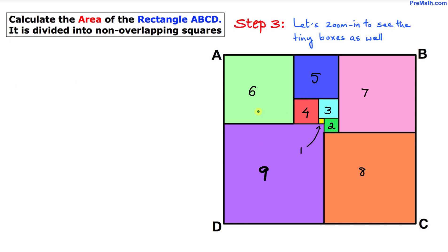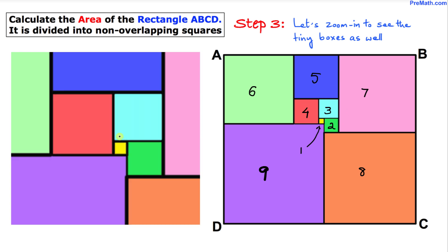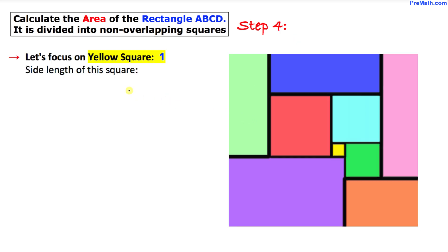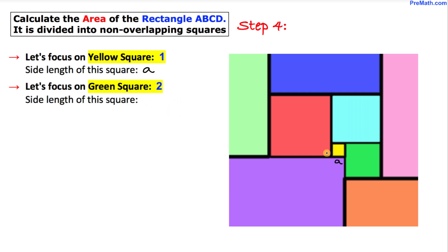Let's zoom in to this rectangle to see these tiny boxes as well. Here we can see them magnified. Let's focus on this tiny yellow square in the middle — we are going to suppose that the side length of this tiny yellow square is a units. Now let's focus on this green square, and I'm going to call the side length of this green square b.